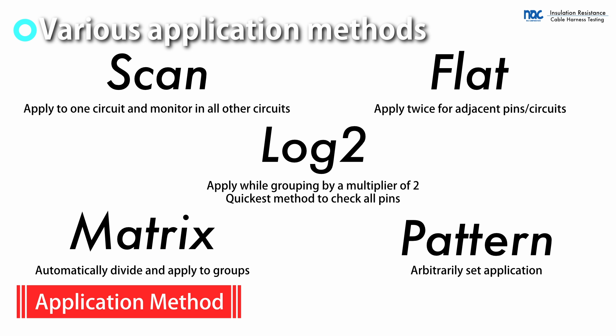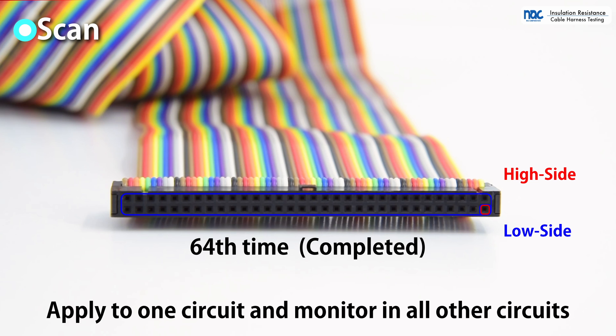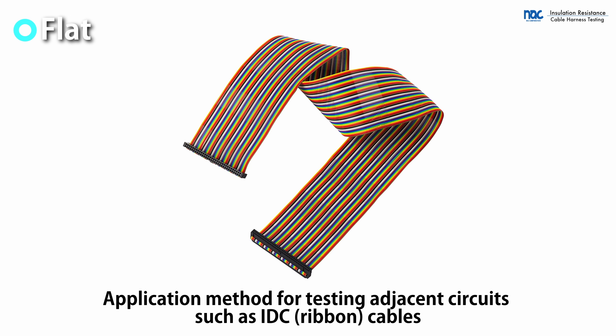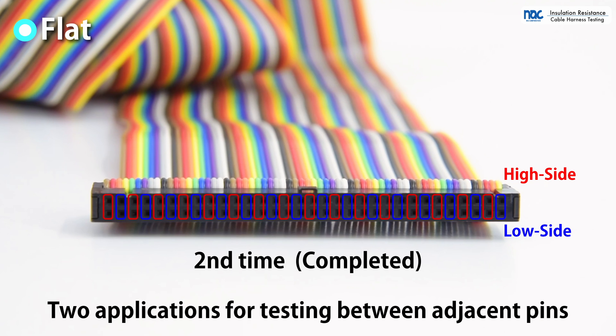There are several application methods. With scan, voltage is applied to one pin at a time while all other pins are monitored. High voltage is applied to all pins in sequence. This is equivalent to testing by an insulation tester. Flat is for testing ribbon cables. It is intended for testing adjacent pins and is completed in two applications.